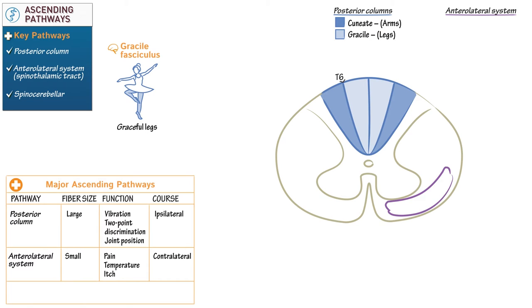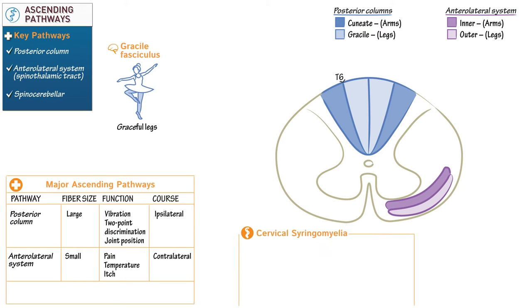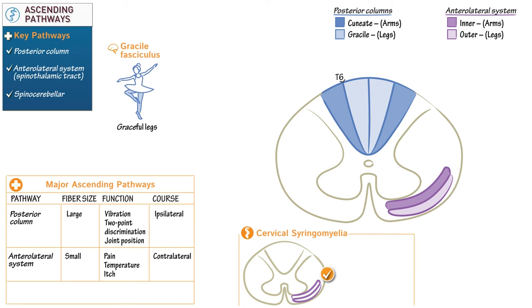The somatotopic organization of the anterolateral system is such that arm fibers lie on the inside and leg fibers lie on the outside. As a mnemonic, consider the clinical correlation of cervical syringomyelia. Draw an outline of the cervical spinal cord with gray matter horns, demarcate the anterolateral system, and show its fibers crossing the ventral commissure. A fluid-filled cavity — a syrinx — expands outward and encroaches upon the anterolateral system, affecting the inner arm fibers prior to the outer leg fibers, and also affecting the crossing fibers at that level.